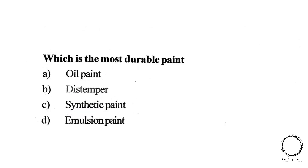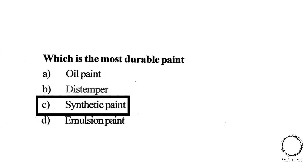Next, which is the most durable paint? A. Oil paint, B. Distemper, C. Synthetic paint, D. Emulsion paint. The right answer is C, Synthetic paint.